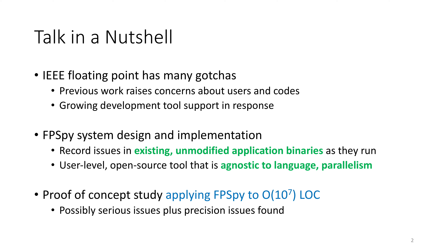What we bring to the table is a tool called FPSpy. The majority of this talk is about its design and implementation. The point of FPSpy is to record, as close as possible to the production level, issues in existing unmodified application binaries — not source code, not middle-level code — but binaries as they run. FPSpy is a user-level open source tool that is agnostic to the languages chosen for these applications, or indeed multiple languages, and also agnostic to the model of parallelism used. This allows you to monitor scientific applications at large scale as they run.